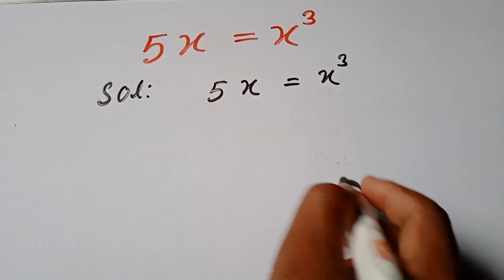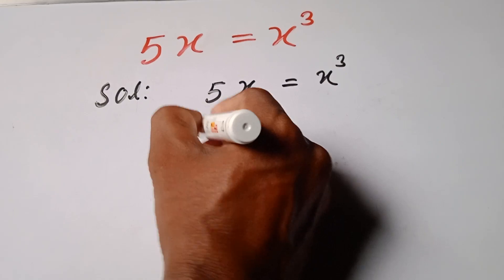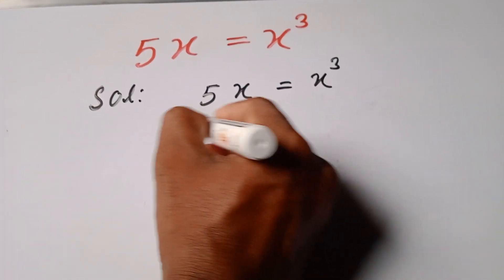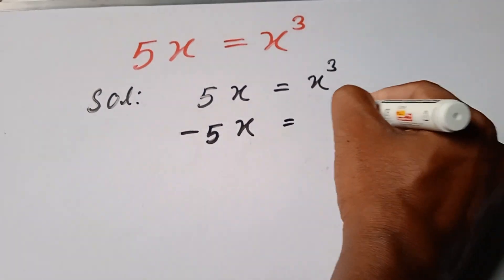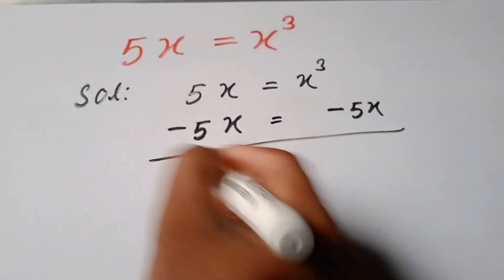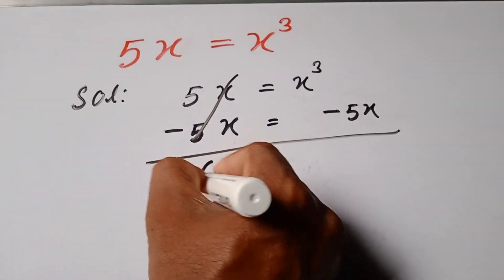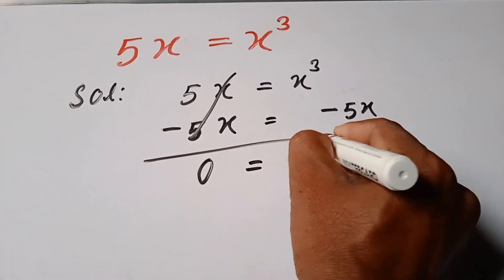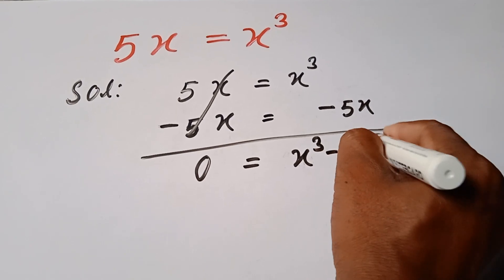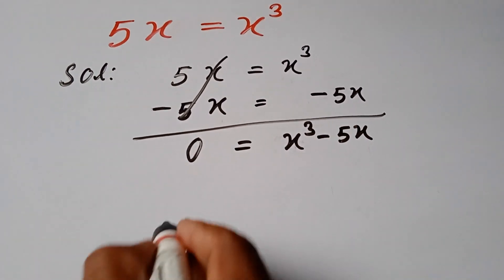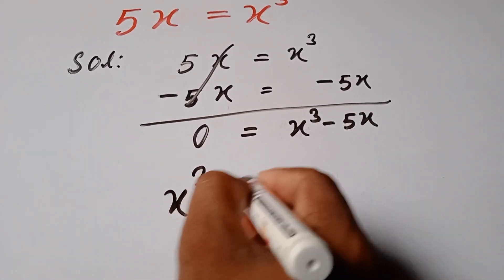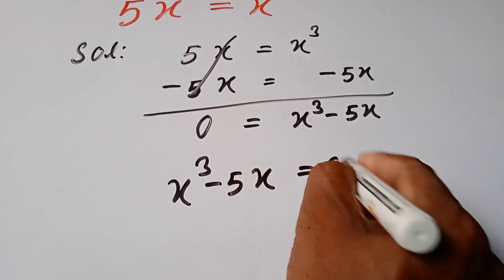Then, subtract 5x from both sides: minus 5x, minus 5x. Then 0 is equal to x cubed minus 5x, which means x cubed minus 5x is equal to 0.